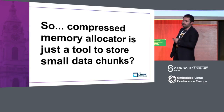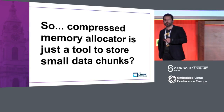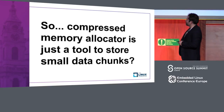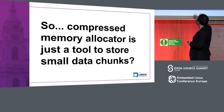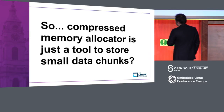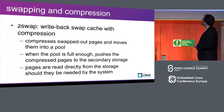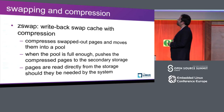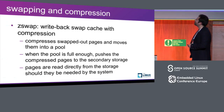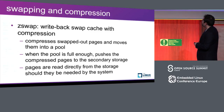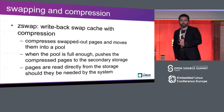Now the question is: is this compressed memory allocator just a tool to store small data chunks? At a bird's-eye view, the answer is yes. Now let's get a little closer to the initial subject - compressed data allocators and how they're used. We're going to talk about swapping and compression as they are implemented in the kernel.